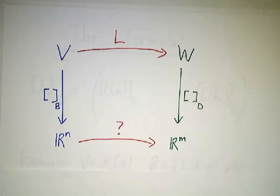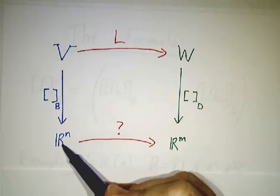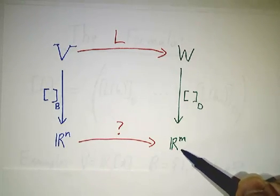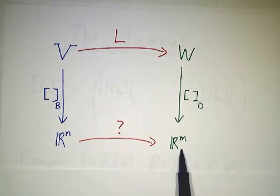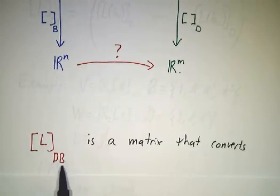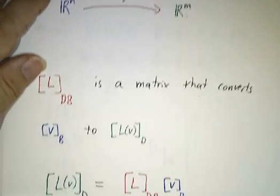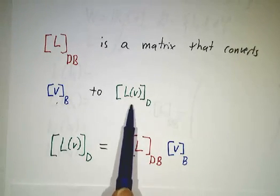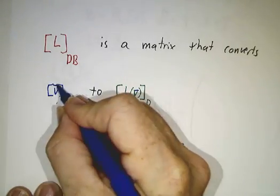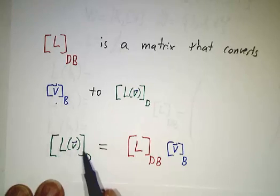It boils down to this picture. V looks like Rn, because every vector here — we can take its coordinates using the V basis and get a vector in Rn. And W looks like Rm. So L should kind of look like a linear transformation from Rn to Rm. We've already seen that every linear transformation from Rn to Rm is given by an m by n matrix. Ideally, we'd like to find a matrix, which we'll write L_DB, that takes the coordinates of the input and spits out the coordinates of the output — converting the coordinates in the B basis to the coordinates in the D basis.